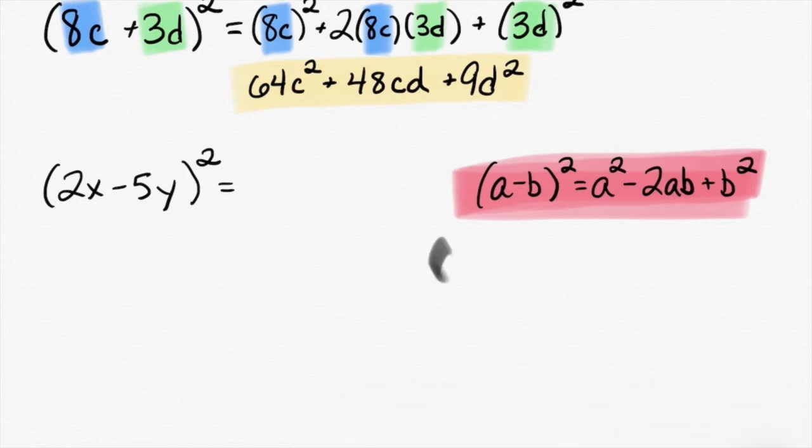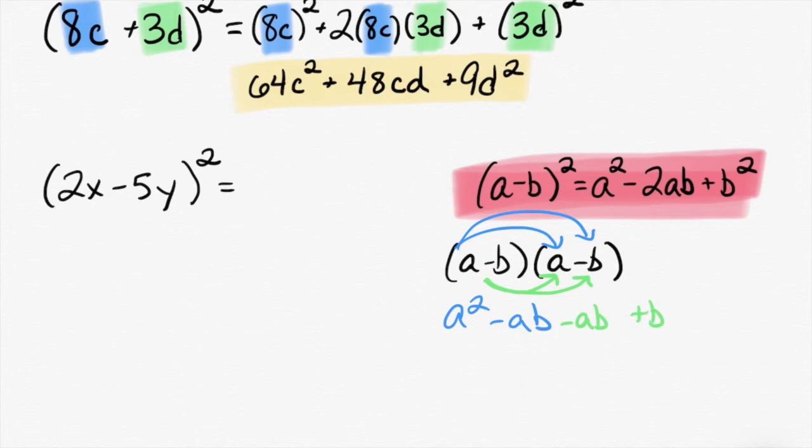If I do a minus b times a minus b, and I distribute, a times a is a squared. A times minus b is minus ab. Then I do negative b times a, which is minus ab, and then I do negative b times negative b, and a negative times a negative is a positive. And negative ab minus ab is minus 2ab. So that's why it works.